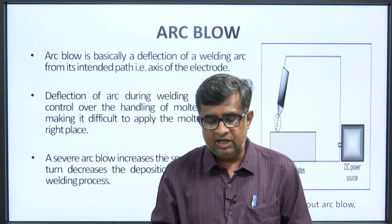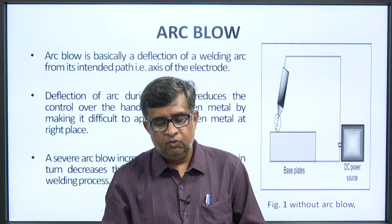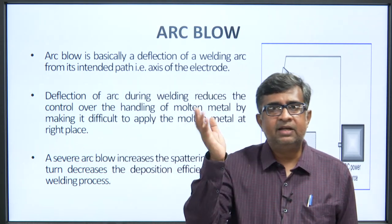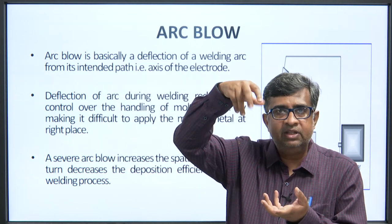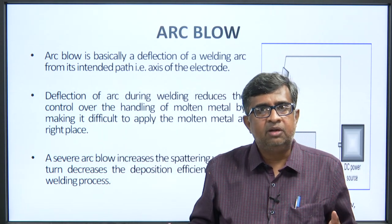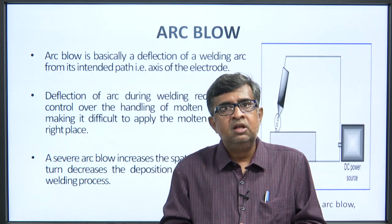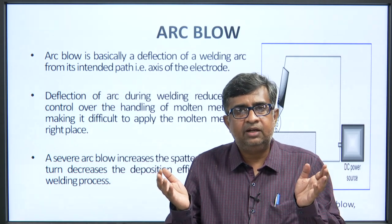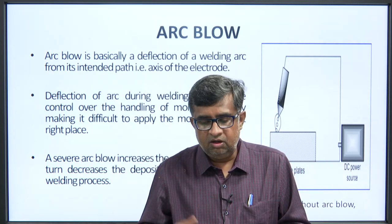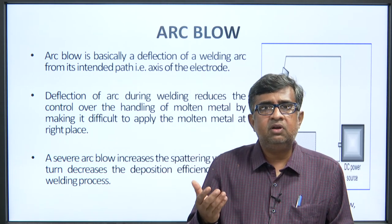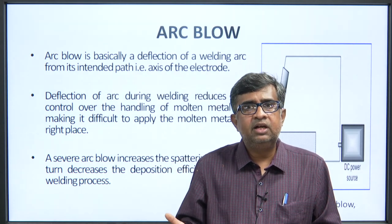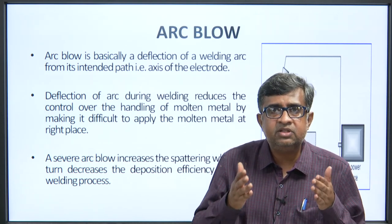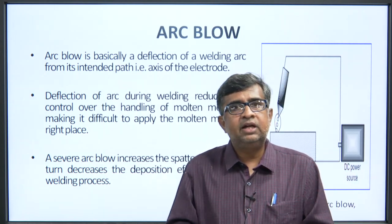A severe arc blow increases spattering, which in turn decreases the deposition efficiency of the welding process. Spattering is when droplets are not reaching the zone where they should be — they go here and there — and because of that spattering the welding efficiency is hindered. Arc blow is very important and needs to be controlled; if it is not controlled you can never get proper welding.